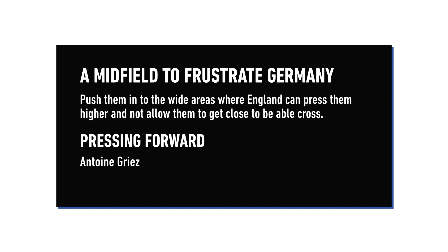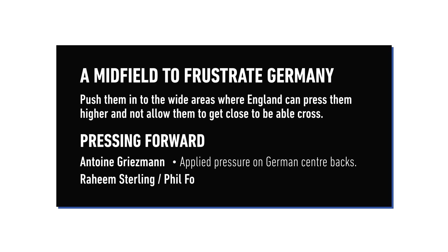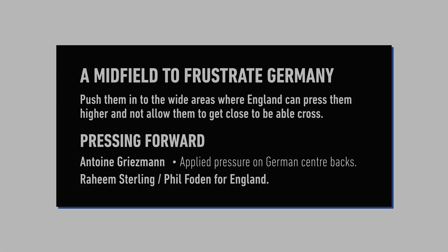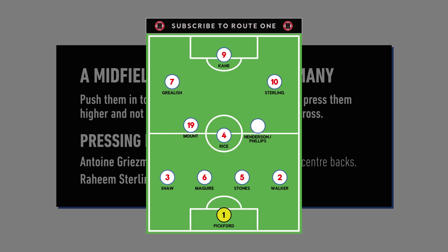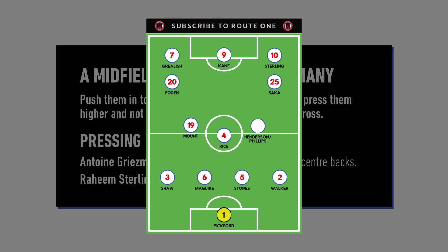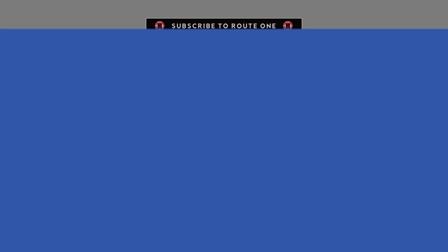France had Antoine Griezmann in their forward line applying a lot of pressure, especially on the Germany centre-backs. For England, you could have this in Raheem Sterling — Phil Foden would also be good in this role. But I have Grealish and Sterling for the balance of a creator in Grealish and a pacey goal-scoring winger in Sterling, who has proven he can do it in this tournament. I didn't used to have Sterling in my starting 11s before the Euros, but he's scored both of England's goals and I can't see any way in which Gareth Southgate leaves him on the bench.